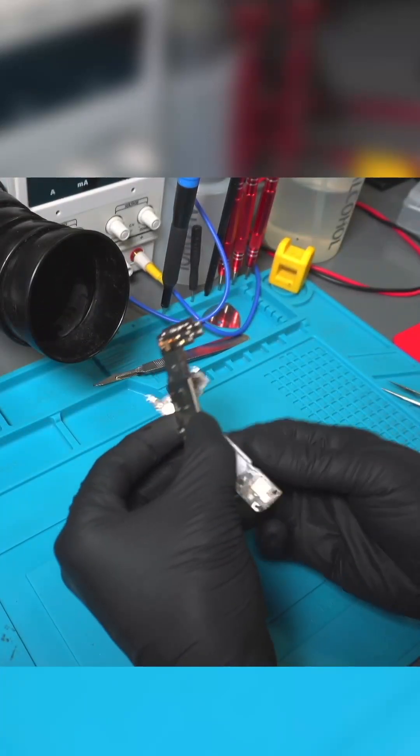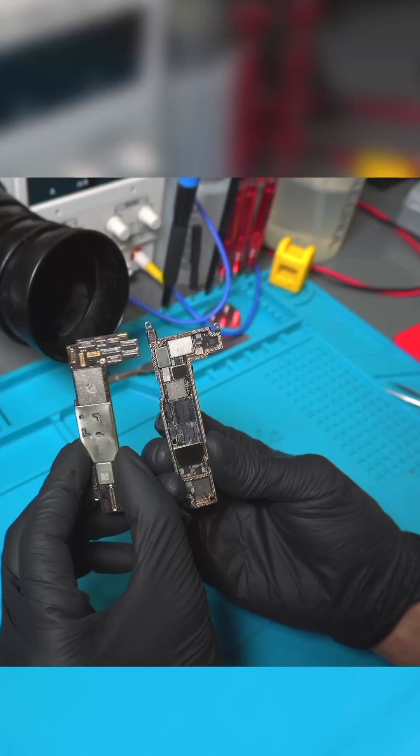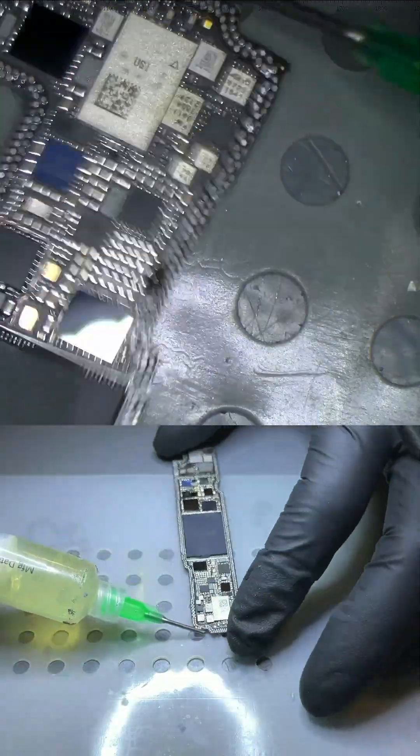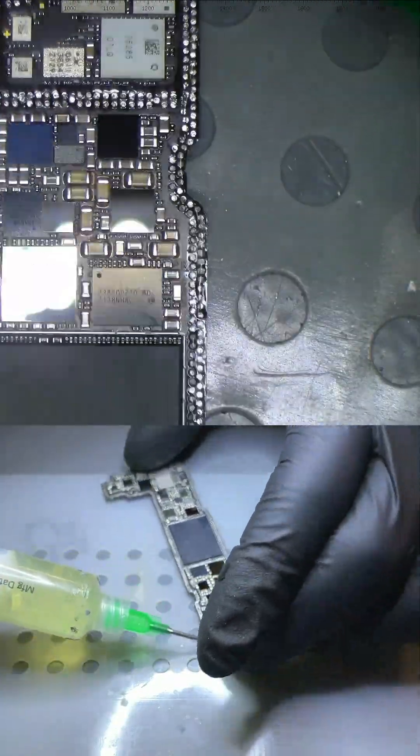As you see here, we have the upper motherboard and the lower motherboard. Once it's cooled, we begin to clean the traces from the upper layer motherboard.